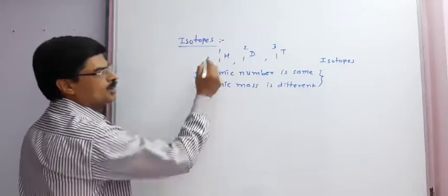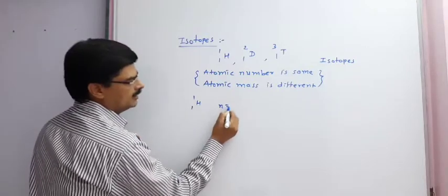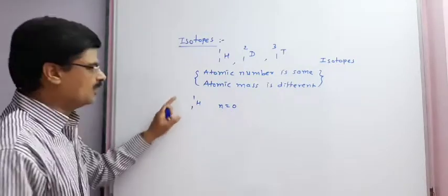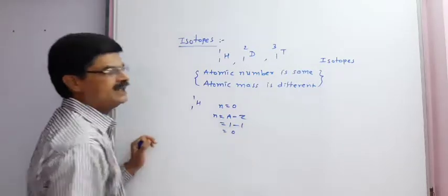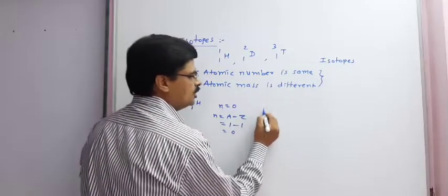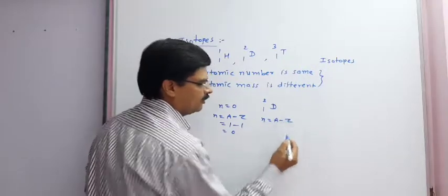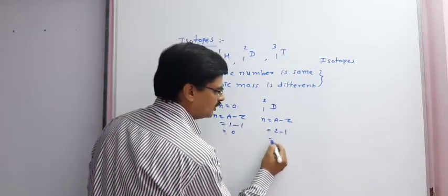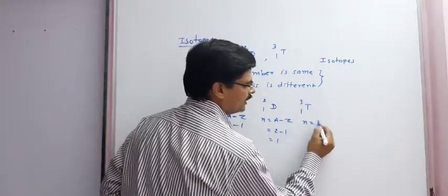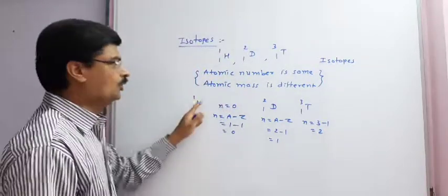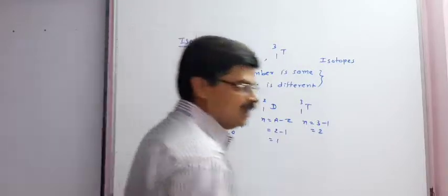We can find the number of neutrons in all three isotopes. For ¹H¹: n = 1 − 1 = 0. For deuterium ¹D²: n = 2 − 1 = 1. For tritium ¹T³: n = 3 − 1 = 2. So hydrogen, deuterium, and tritium are isotopes of each other.